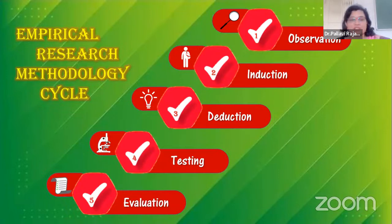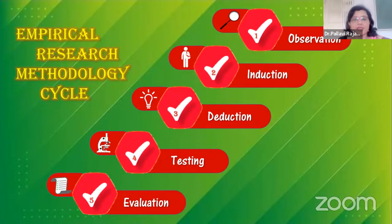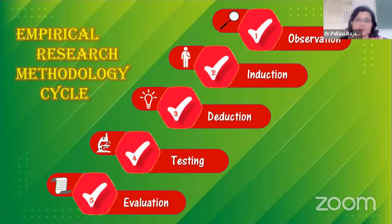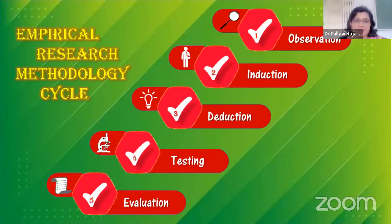First is observation. At this phase, an idea is proposed as a hypothesis. During this phase, empirical data is gathered using observation. For example, a particular species of flowers blooms in a different color during a specific season. In this particular phase, ideas are generated and given as a hypothesis.